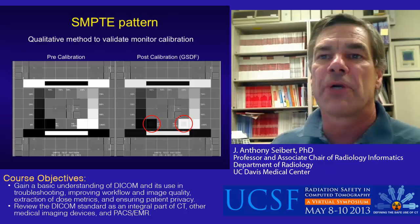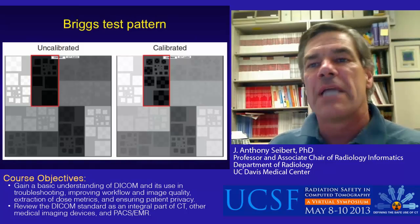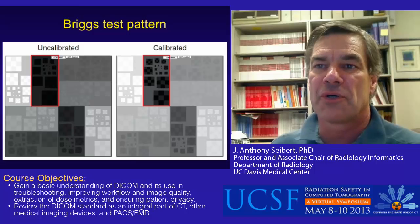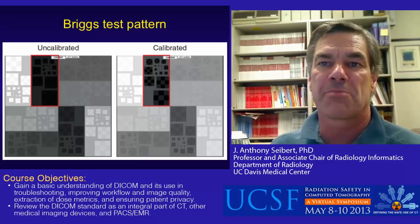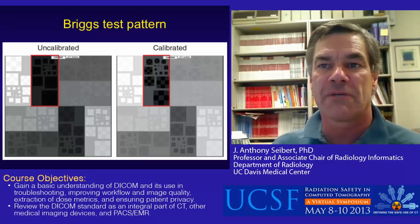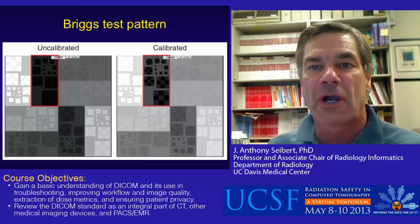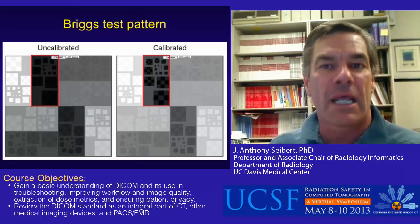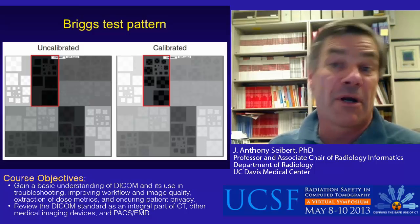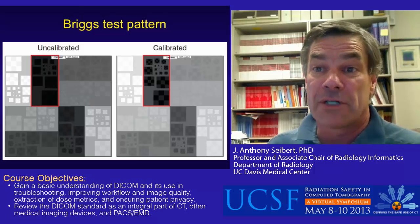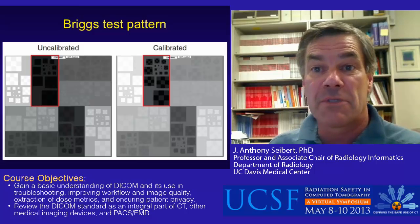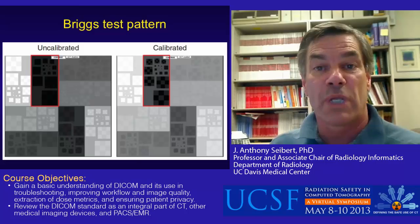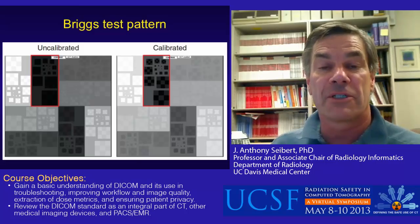Another test image called the Briggs pattern demonstrates the more pronounced impact of an uncalibrated monitor, particularly for displaying subtle differences in grayscale in the darker areas of the image, compared to the same image shown with a calibrated monitor on the right. Monitor calibration is a key aspect of the imaging system, as the image is only as good as its weakest link, which is often the monitor itself.